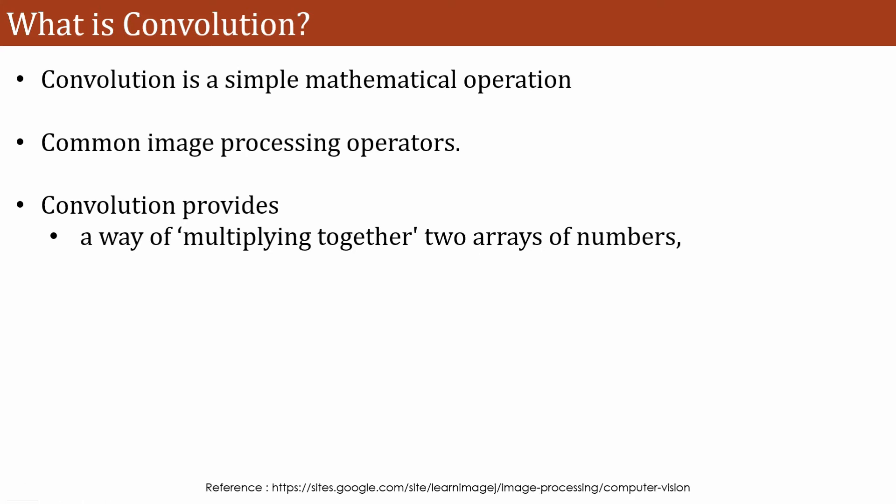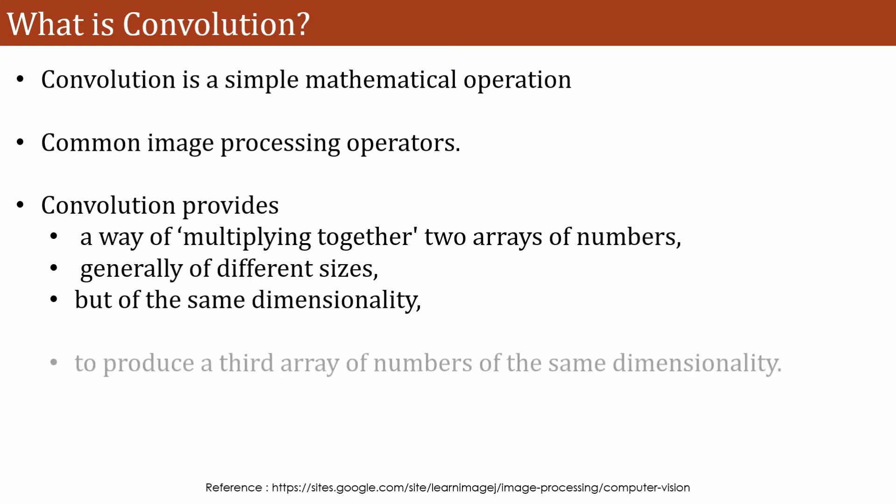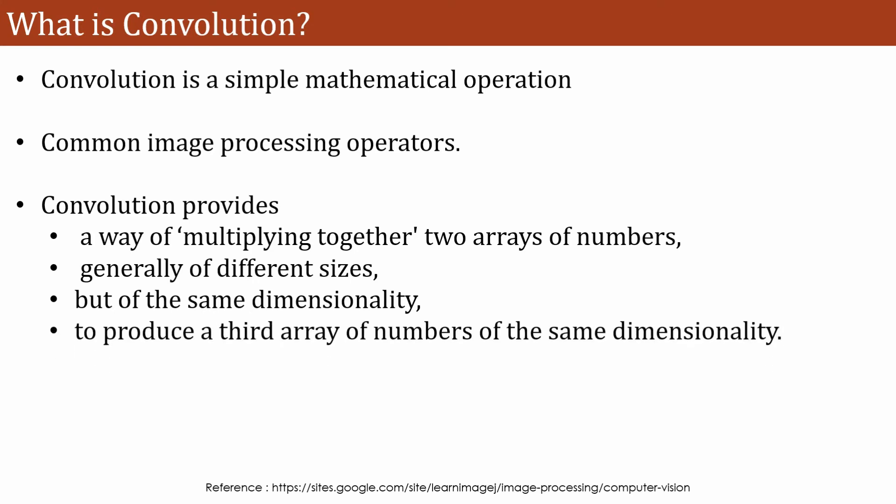In our case of digital image processing, an image will be one array. Similarly we need another array upon which we will apply the convolution function. Generally these two arrays are of different size but they should be of the same dimension. The third array which will be produced will have the same dimension as the original two arrays.